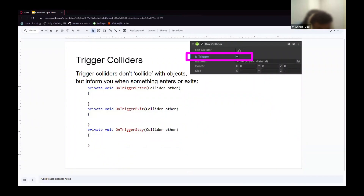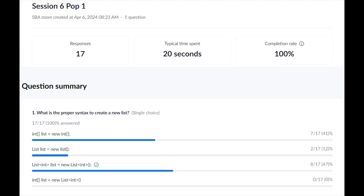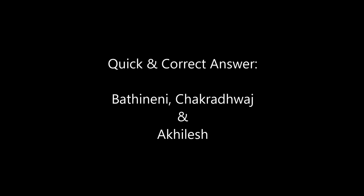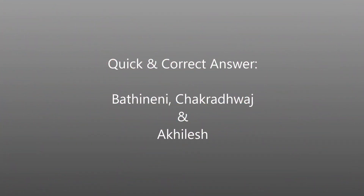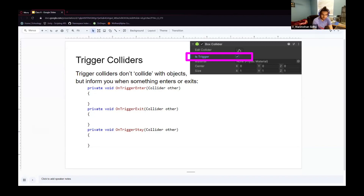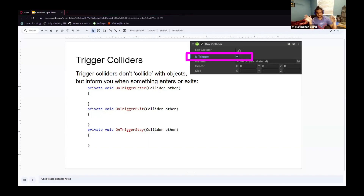Before moving on, let's do a pop quiz. The syntax 'int[] list = new int[]' is an array, not a list — remember the difference. An array you cannot change the size of; a list you can. The second prompt, 'list = new list' without specifying the type, is also incorrect.